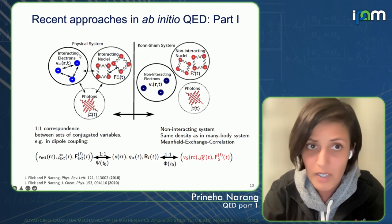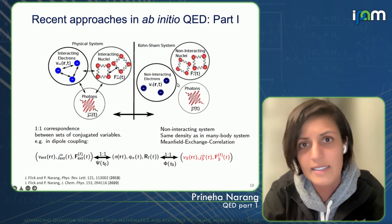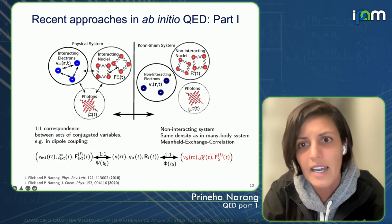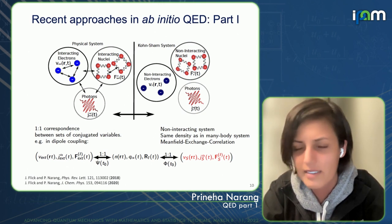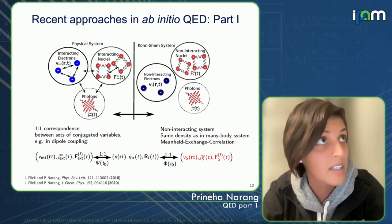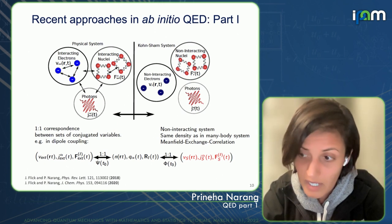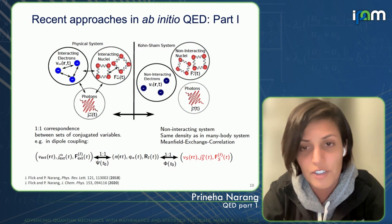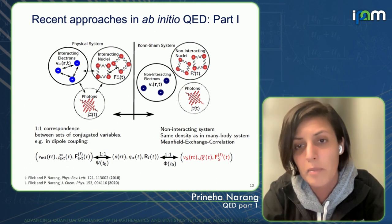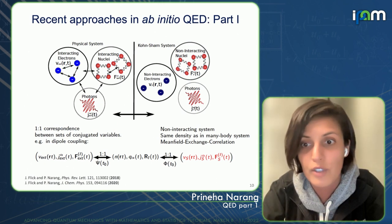Our physical system has interacting electrons, nuclei, and photons. We map onto an effective Kohn-Sham system with electrons, nuclei, and photons. As always, this is both the positive and perhaps the downside of using a time-dependent density functional theory approach: we need a good mean-field exchange-correlation kernel. Developing such functionals for light-matter systems has turned into a cottage industry of its own, with a lot of work in the past few years benchmarking which exchange-correlation kernels are actually relevant.